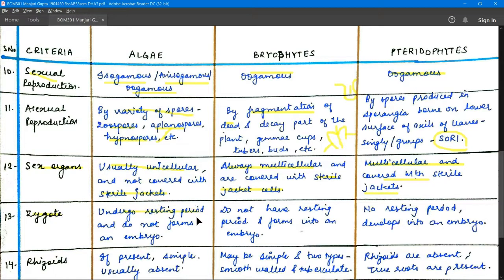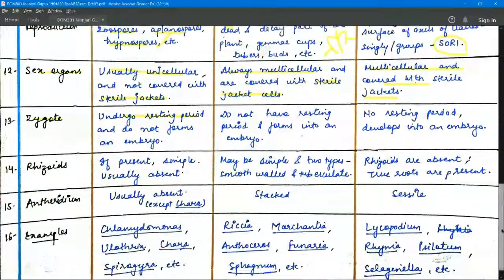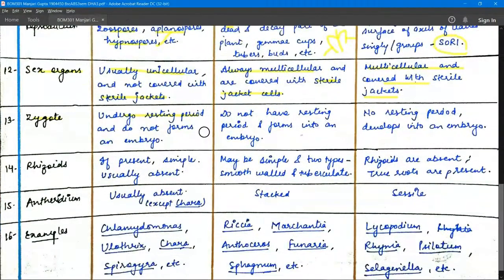Regarding the zygote: after fertilization of the female gamete by the male gamete, the zygote undergoes a resting period in algae. Under favorable conditions, it forms an embryo. In bryophytes and pteridophytes, the zygote directly forms an embryo without a resting period.